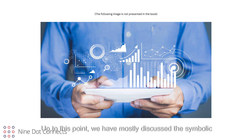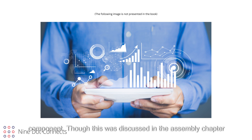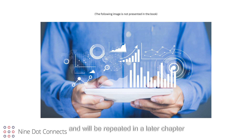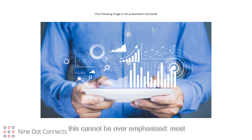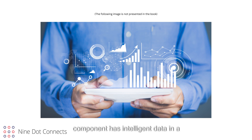Up to this point, we have mostly discussed the symbolic graphical representation of the component. However, it is useless if it does not represent a real-world component. Though this was discussed in the assembly chapter and will be repeated in a later chapter regarding assembly documentation, this cannot be overemphasized — most projects will crash and burn at assembly due to a bad bill of materials. Most of this can be avoided when a component has intelligent data in a consistent form with other components in the library.